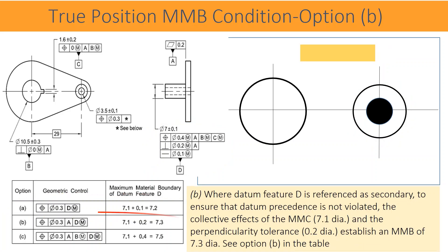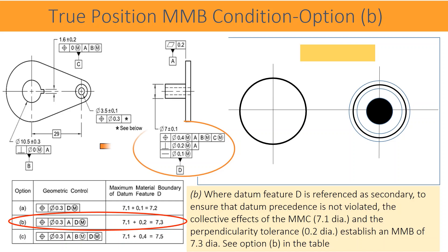Where datum feature D is referenced as secondary, to ensure that datum precedence is not violated, the collective effects of MMC 7.1 diameter and the perpendicularity tolerance 0.2 diameter establish an MMB of 7.3 diameter. See option B in the table.